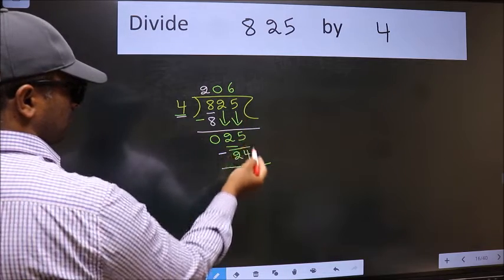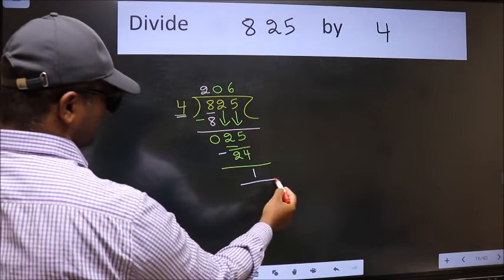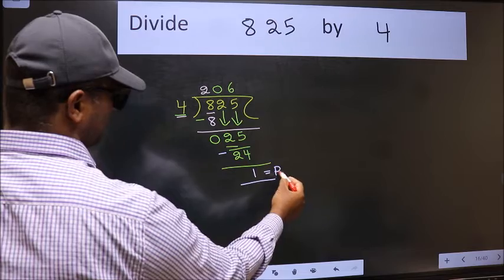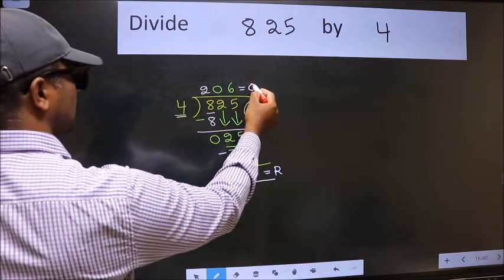No more numbers to bring down, so we stop here. This is our remainder, and this is our quotient.